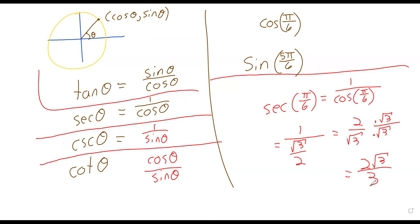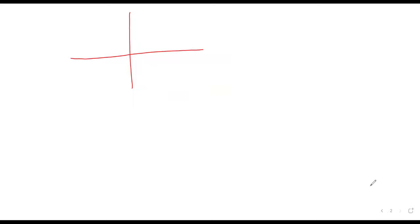Likewise, the material we did with reference angles - if you can use a reference angle to figure out the sine and the cosine, then you can figure out any of the other four trig functions. We actually haven't covered all of the reference angle stuff yet. We made a statement about what happens to reference angles when they're in the second quadrant. So before we start talking about the other trig functions, we should finish this up.